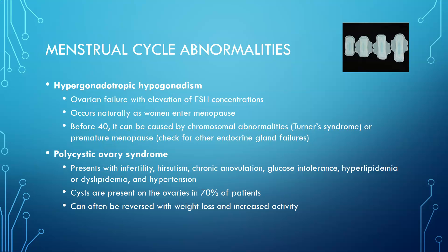Polycystic ovary syndrome (PCOS) is quite common and can cause menstrual cycle abnormalities. It presents with infertility, hirsutism (facial hair), chronic anovulation, glucose intolerance linked to type 2 diabetes, hyperlipidemia or dyslipidemia, and hypertension. Ovarian cysts are present in 70% of patients. PCOS can often be reversed with weight loss and increased activity; patients are generally overweight or obese and may be pre-diabetic.